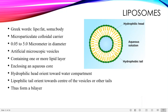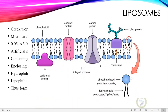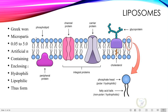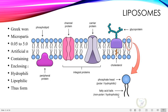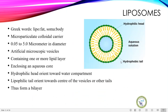This structure reminds us of the fluid mosaic model of the cell membrane. The cell membrane is made up of phospholipids, which have hydrophilic heads and lipophilic tails, with several proteins in a sea of lipids. Liposomes have a very similar structure to that of the cell membrane, with non-polar hydrophobic tails and polar hydrophilic heads.